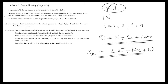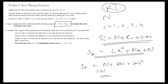Problem A asks: given three shares — three points on the polynomial — how do you construct and get s0? You can see that s0 = n + k·0 + l·0² = n, so s0 is your secret. Given these three points on the polynomial, how do you plug in 0 and get the secret out? Part B asks you to prove that given only two different points on the polynomial, it is not enough — two points tell you absolutely nothing about the secret.